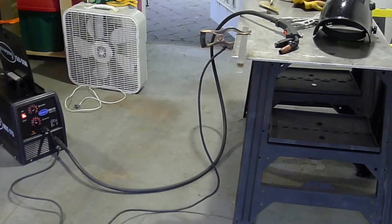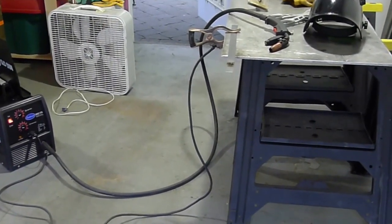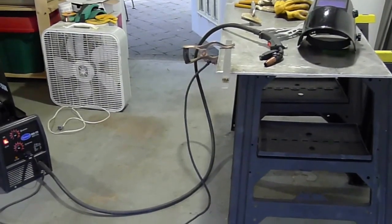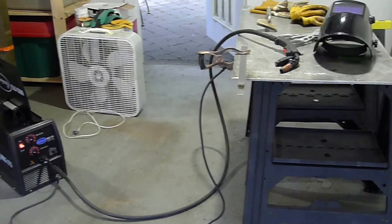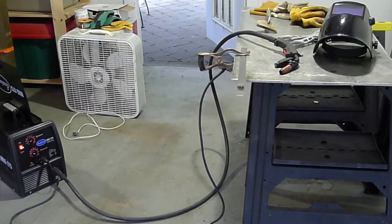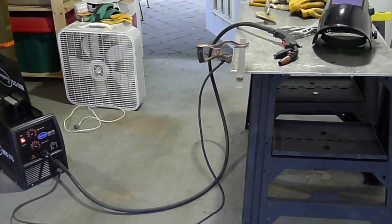Then you try to weld to it and no matter what you do, with the big welder you blow through it. Unless you can get some copper backing in there to stop that from happening, one of the solutions I found is to use MIG brazing wire.